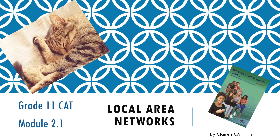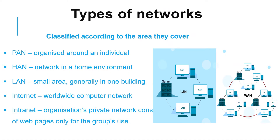This is Grade 11 CAT Module 2.1: Local Area Networks. There are many different types of networks, classified according to the area they cover. A PAN is a personal area network, organized around an individual. A HAN is a home area network in a home environment. A LAN is a local area network covering a small area, generally in one building. The internet is a worldwide computer network, and an intranet is an organization's private network consisting of web pages, usually used only for the group.